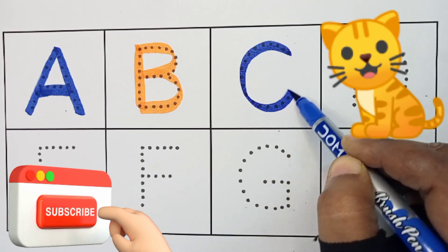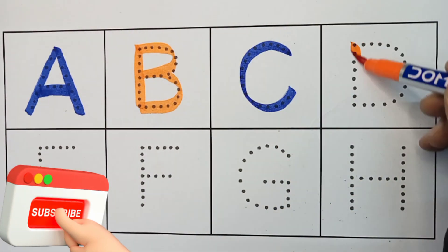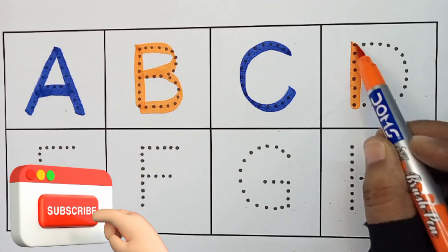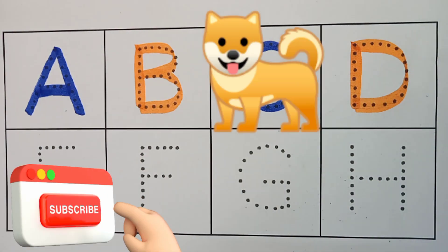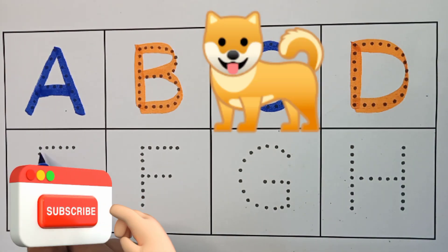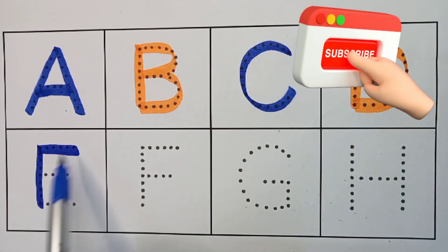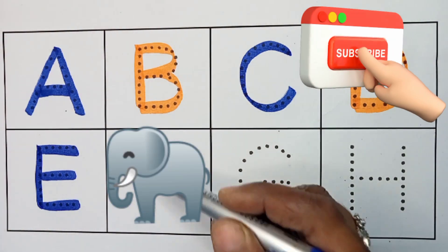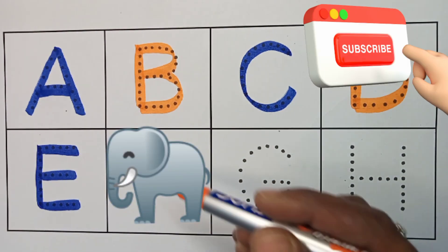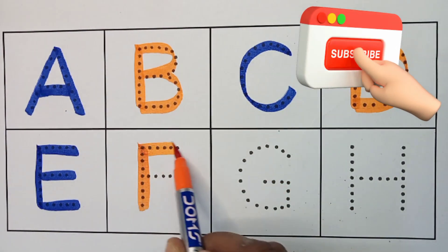C. C for cat. Orange color. D. D for dog. Blue color. E. E for elephant. Orange color.